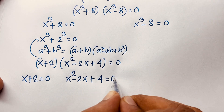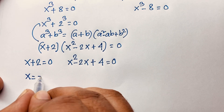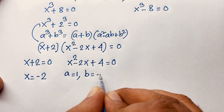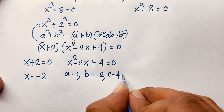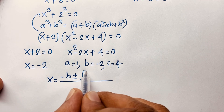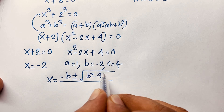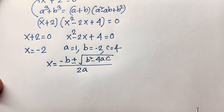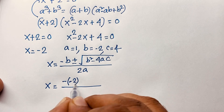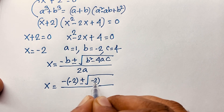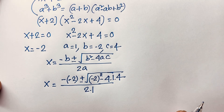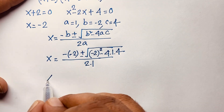From x + 2 = 0, we get x = −2, which is a real solution. The other factor gives the quadratic equation x² − 2x + 4 = 0, where a = 1, b = −2, and c = 4. Applying the quadratic formula: x = (−b ± √(b² − 4ac)) / (2a), we get x = (2 ± √(4 − 16)) / 2.